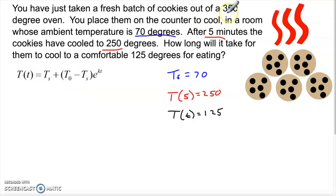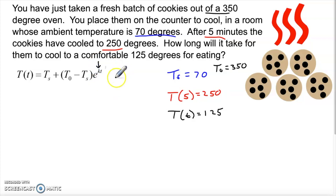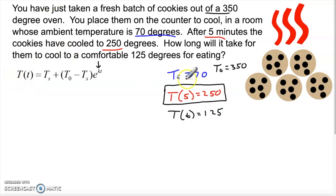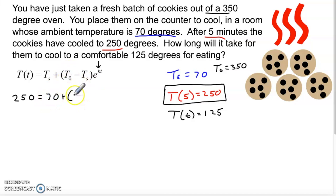Let's look at the equation: T sub s is 70, T sub zero is 350 (they came out of the oven), e we know, and little t is what we'll solve for. Notice we don't know what k is. So the first thing we need to do is find k for this situation. We use the data point T(5) = 250, plugging in: 250 = 70 + (350 - 70) × e^(5k).